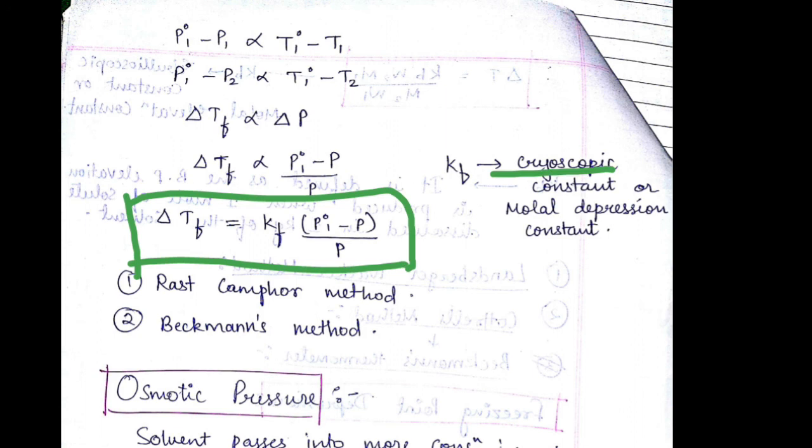ΔTf is equal to Kf W₂ M₁ upon M₂ W₁, where Kf is cryoscopic constant or molar depression constant. The two methods to determine the depression of freezing point are Beckmann's thermometer and Rast-Campher method.